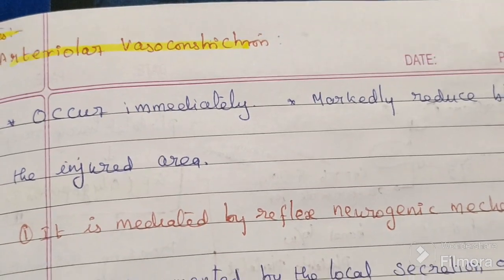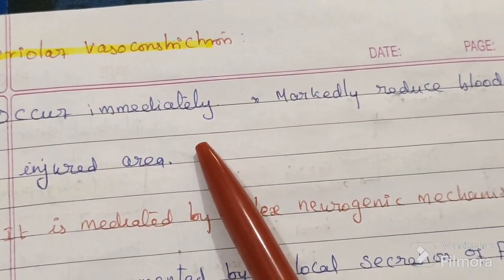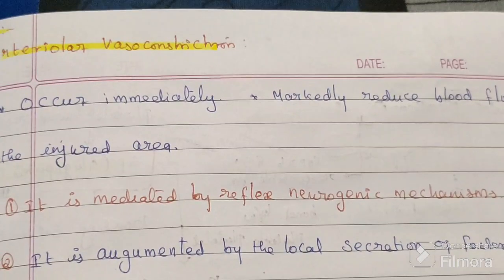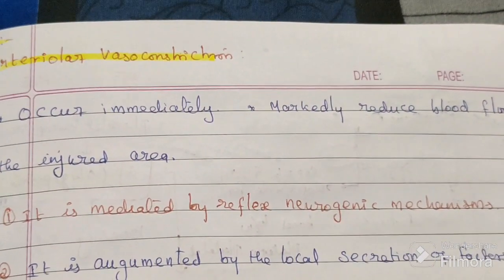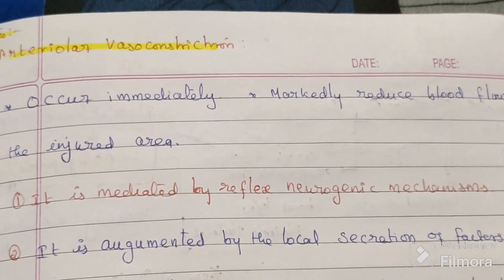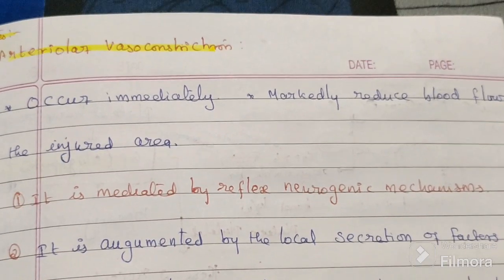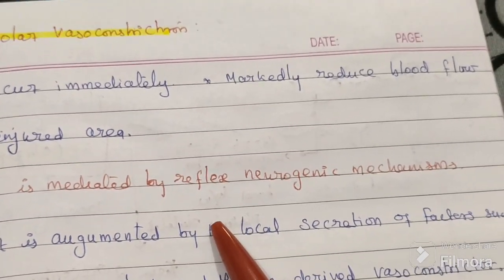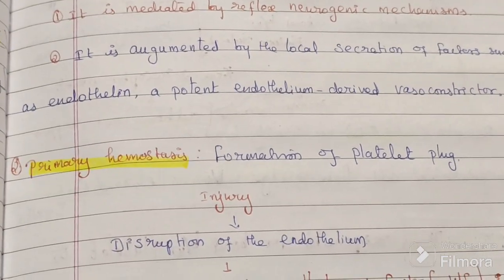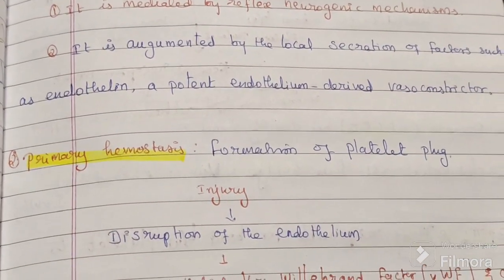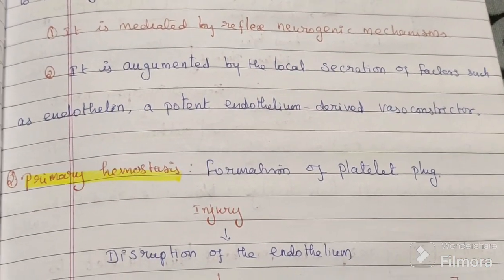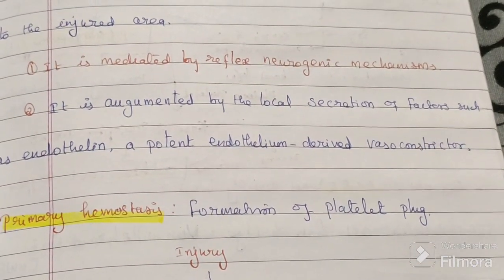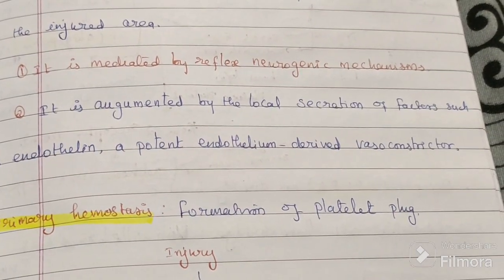The first process, vasoconstriction, is an immediate process. It is mediated by a reflex neurogenic mechanism. The wall of the blood vessels at the injured area undergoes vasoconstriction by this reflex neurogenic mechanism. Bleeding would resume if not for the activation of platelets and coagulation factors.